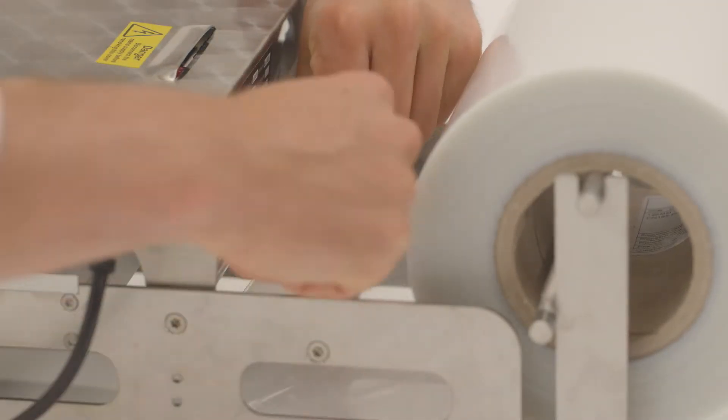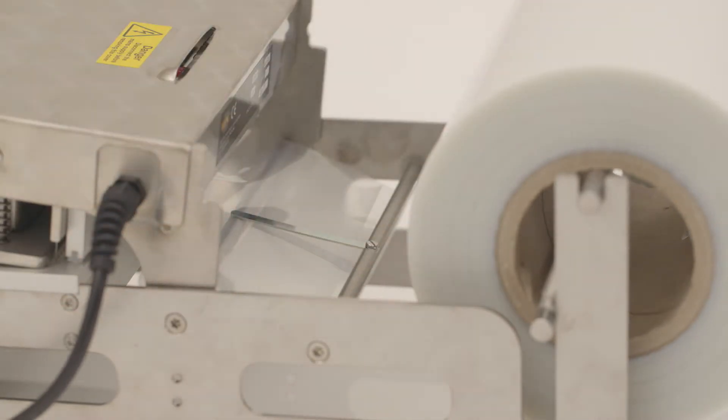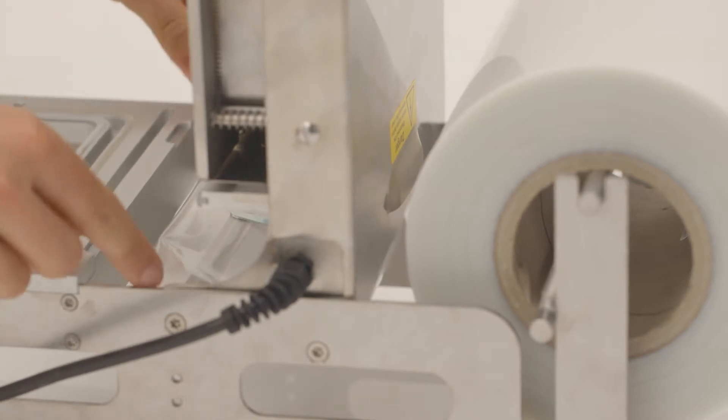Guide the film under the first bar and over the second, so it is held in place by the tab as shown. Lift the sealing head and pull the film through.